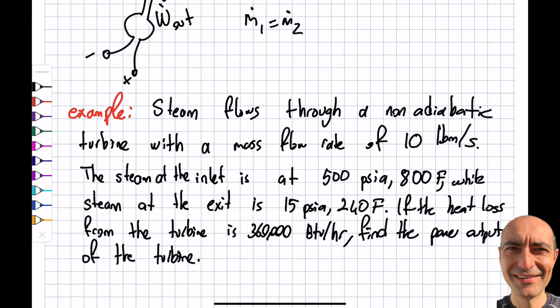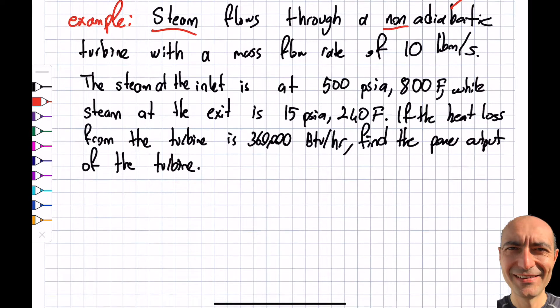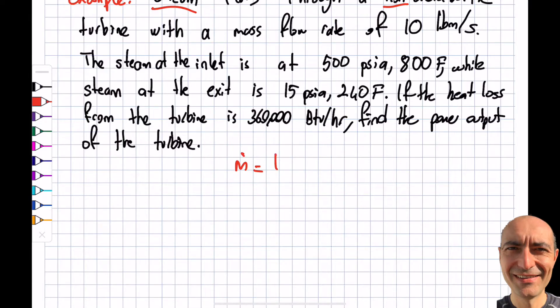I'm back. You can see what the question is. It says it's steam, which we use a lot, flowing through a non-adiabatic turbine. I told you, you cannot always say that Q equals zero. We cannot say this for this particular case because of this word non-adiabatic. It has a mass flow rate at the inlet of 10 lbm/s. The steam at the inlet is 500 psia in terms of the pressure and the temperature is 800°F, fairly high.